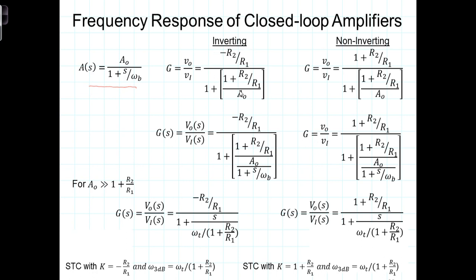So this was the closed-loop gain assuming a finite A0. Now, we didn't derive it, but you can go through a similar type of derivation for the non-inverting. You find that you get the exact same equation, only the numerator has the gain term for the non-inverting ideal op-amp.